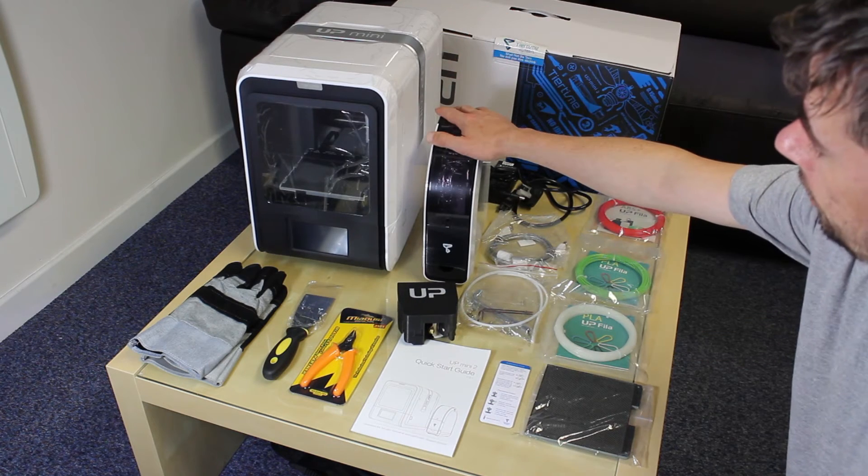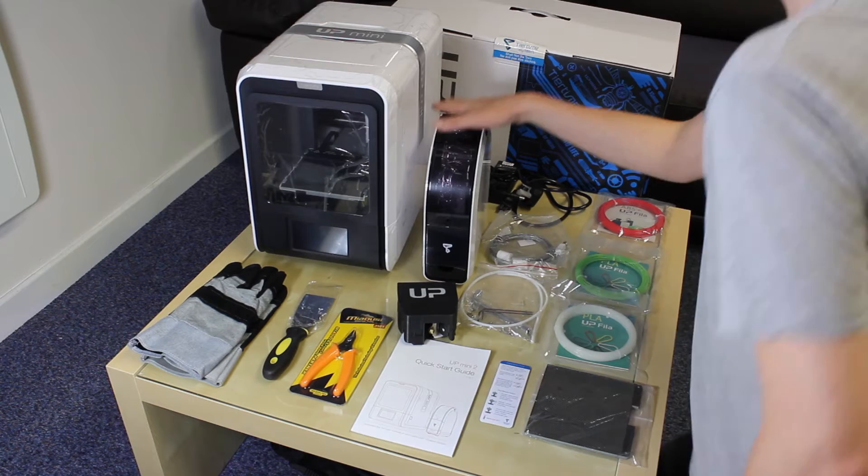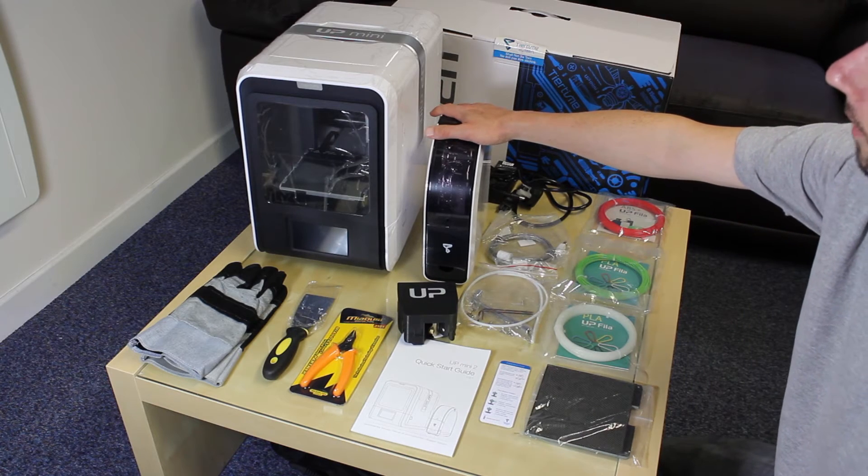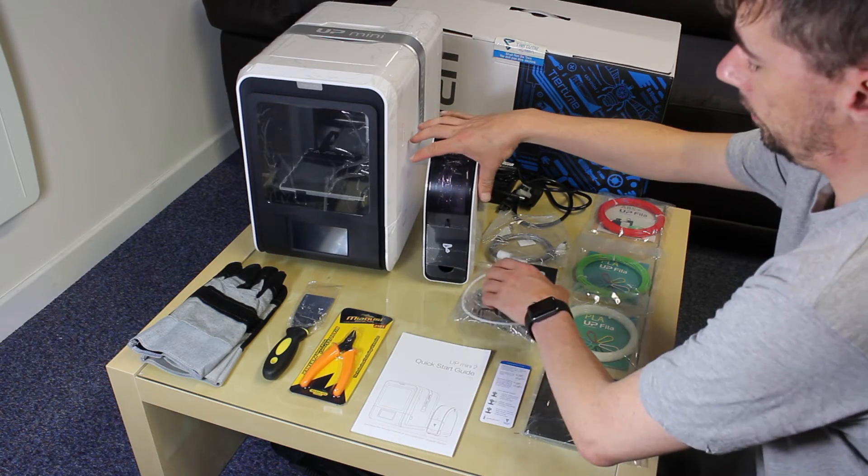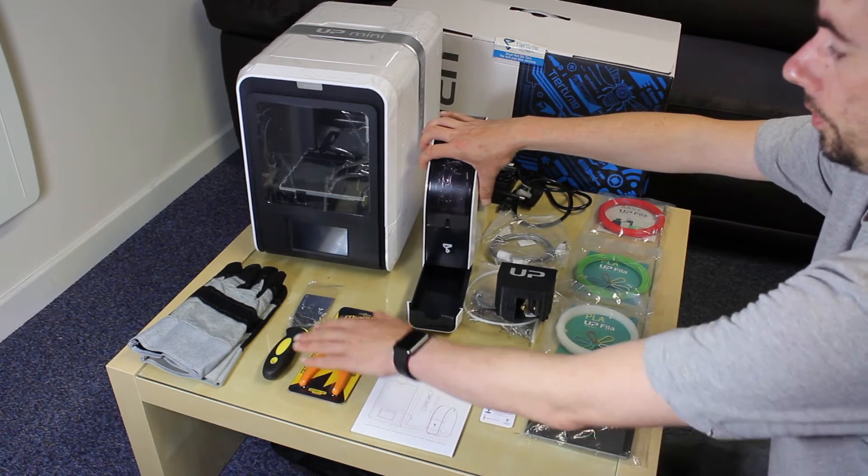You also get this external filament holder which holds a reel. It comes pre-loaded with a 500 gram reel of ABS. And you also get a nice little tray for keeping your tools in.